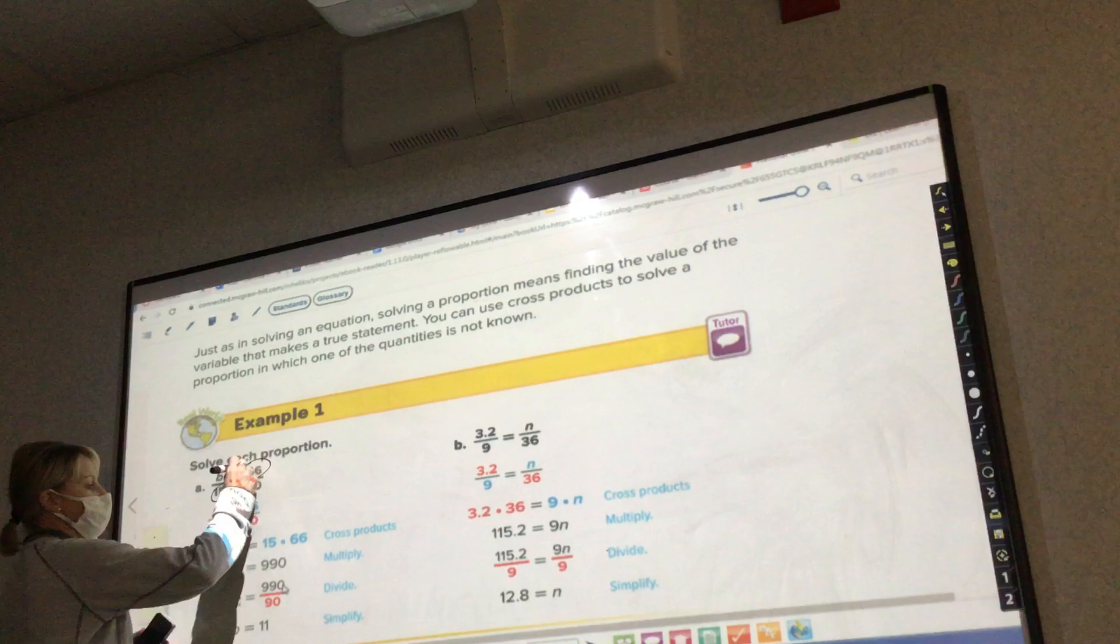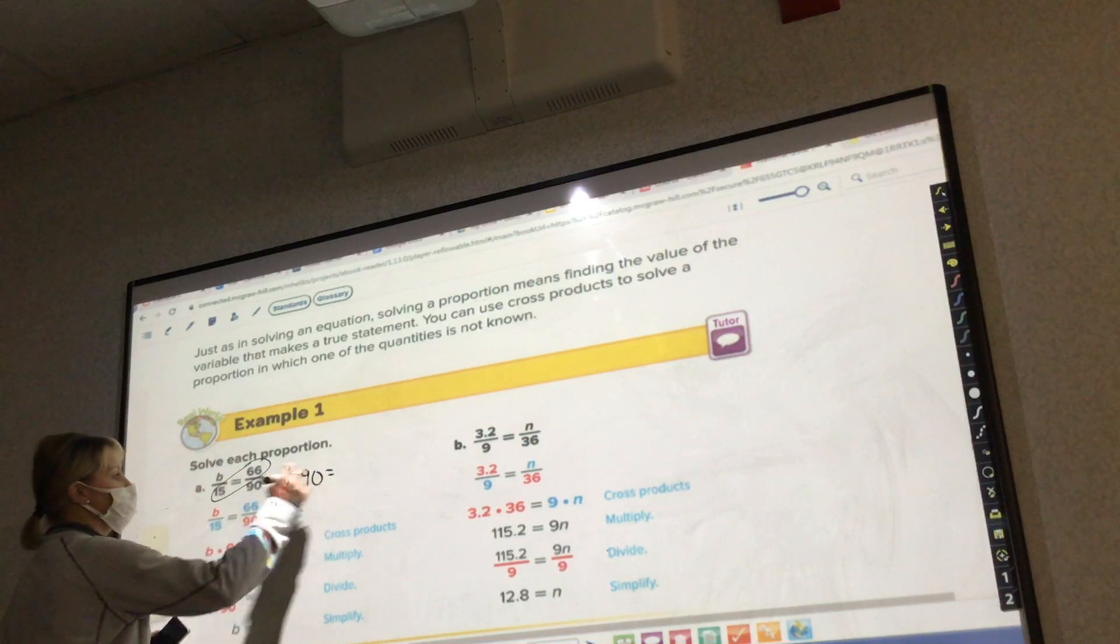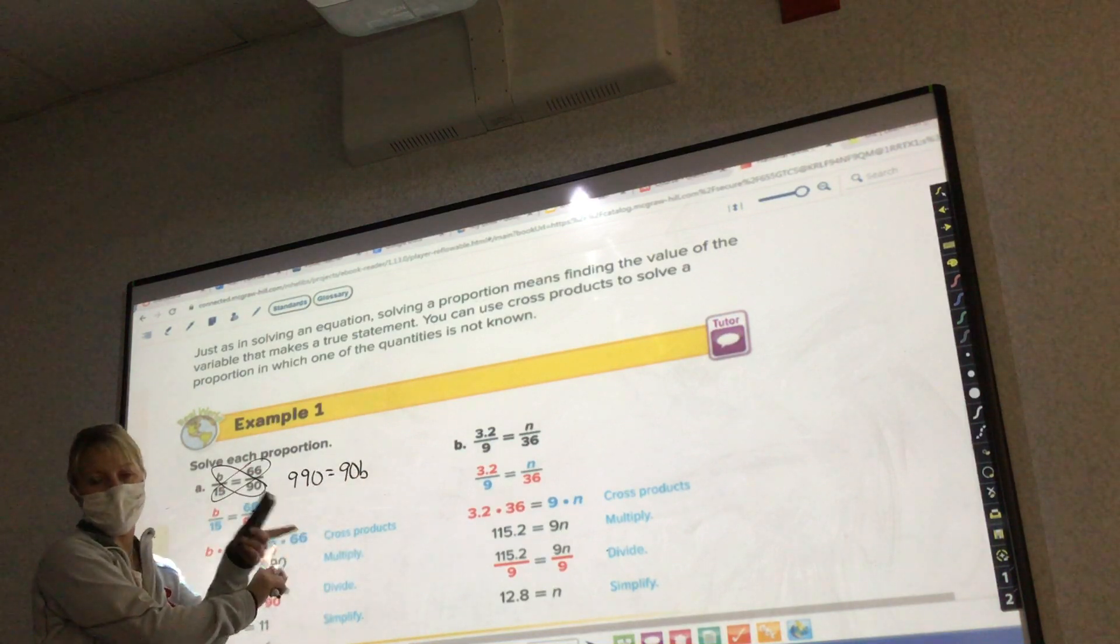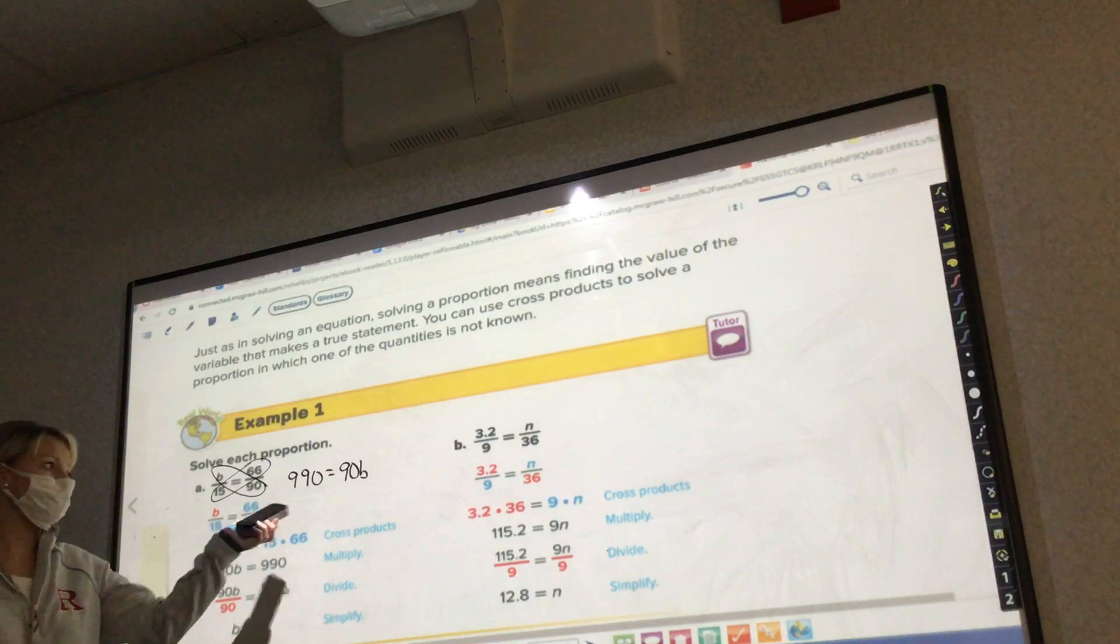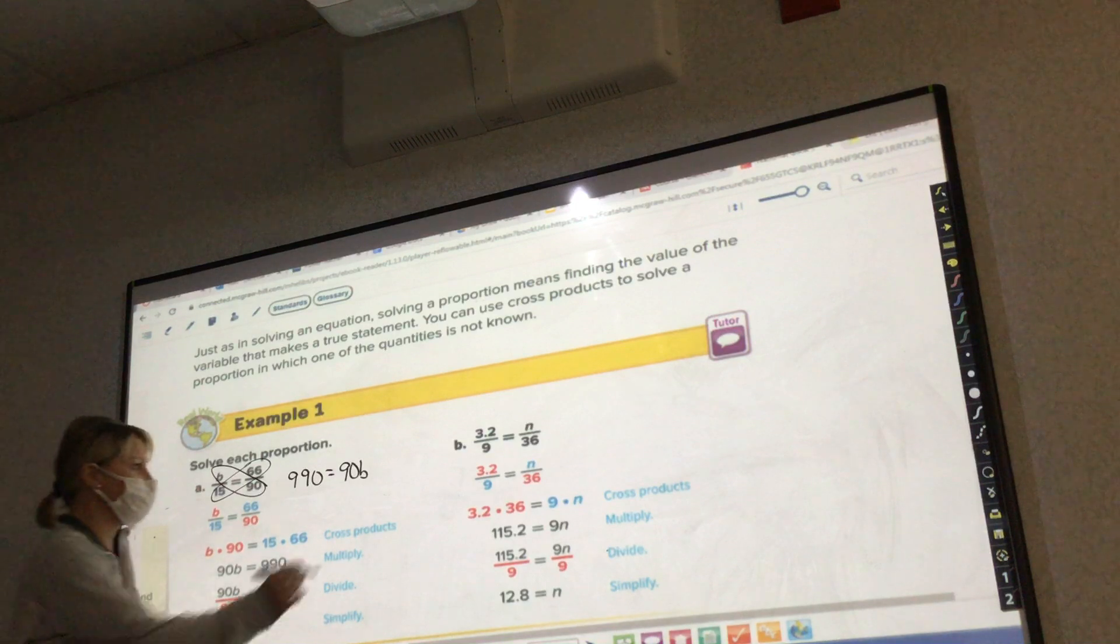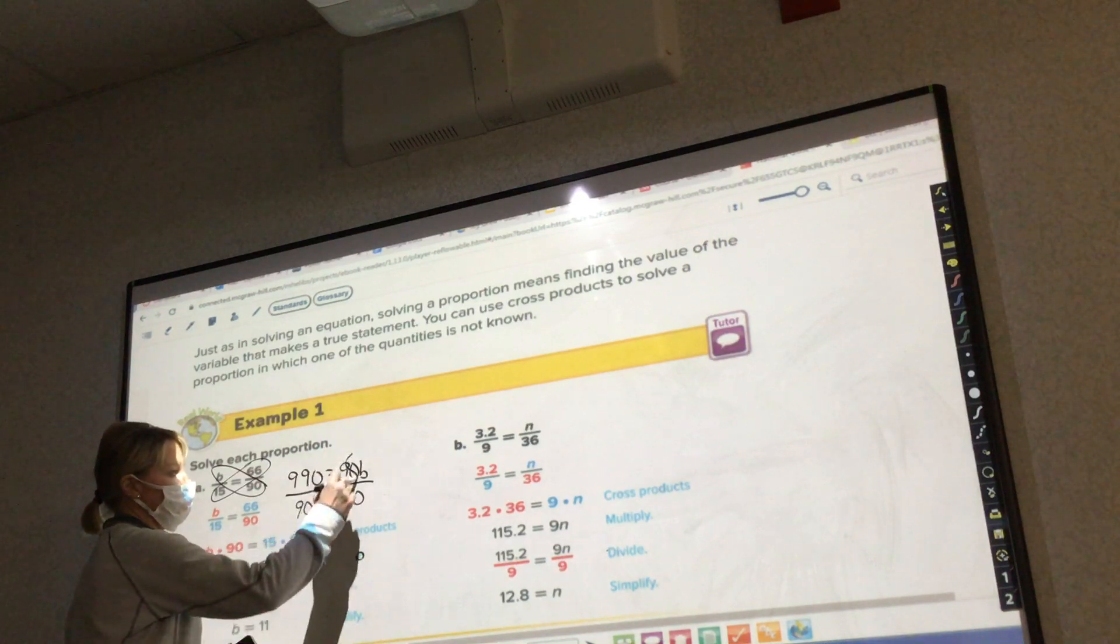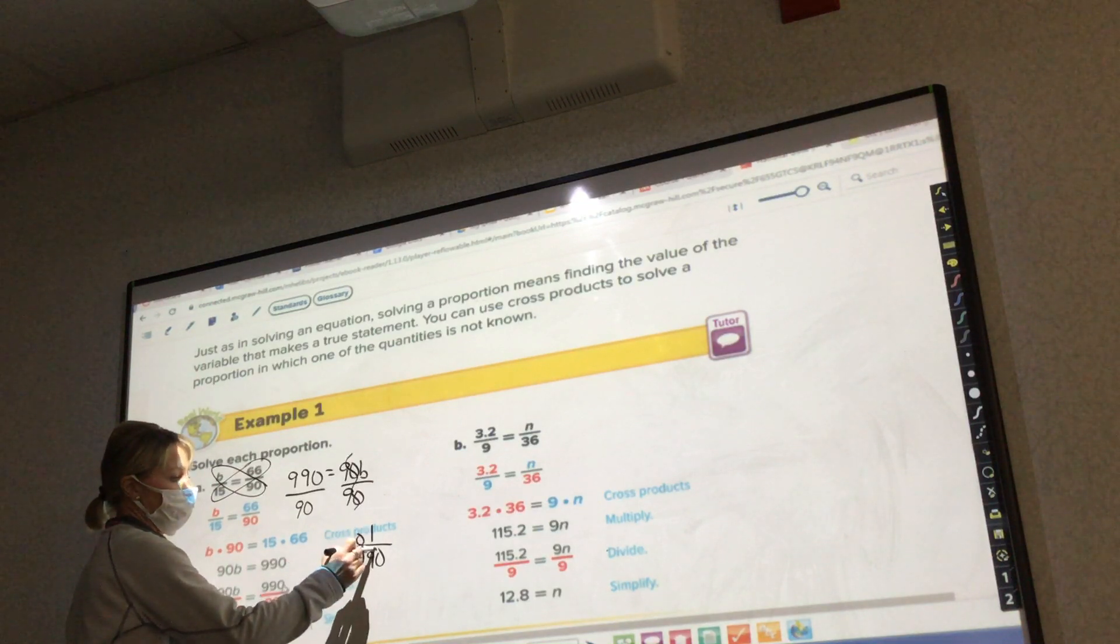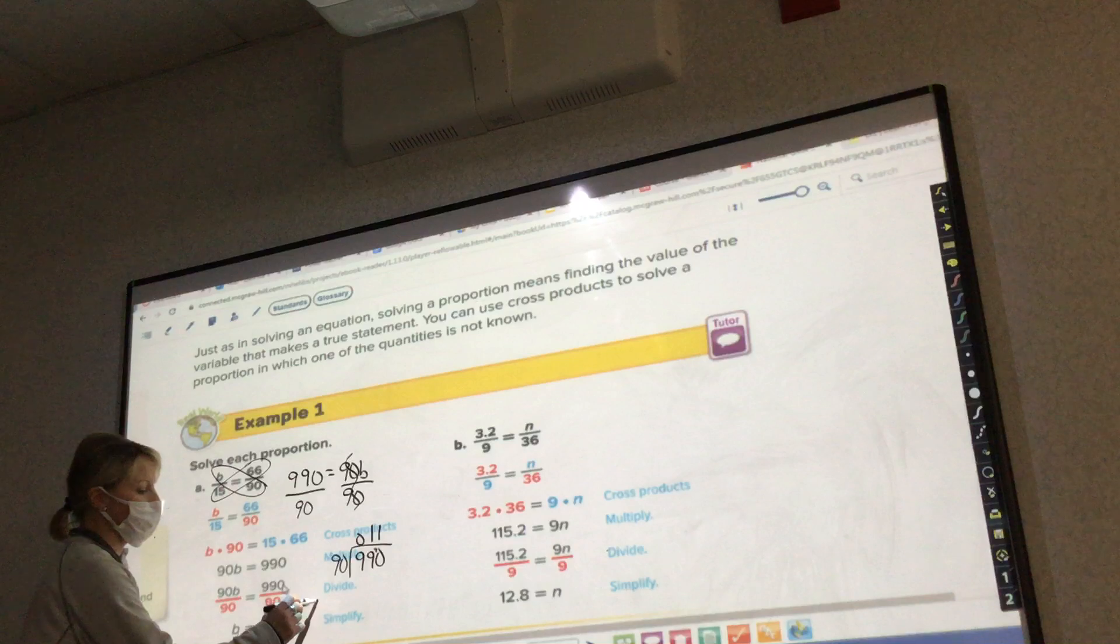So I do 15 times 66, which is 990 equals 90 times b, which would be 90b. Can I have these flip-flopped around? Can I have 90b first equals 990? Yeah, I sure can. It does not matter. But then, how do I solve for b? Divide by 90. I'm going to divide both sides by 90, because these cancel each other out. So I have 990 divided by 90 would be 11. So then I just found out what b equals. b equals 11.